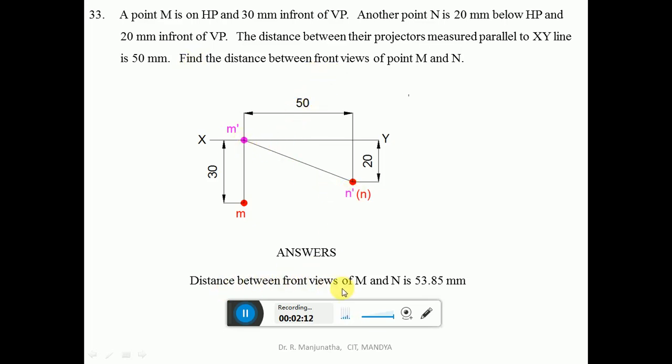The distance between the front views of M and N is 53.85 if you are doing it in CAD. If you are doing it manually, then it becomes 54 mm. This is how we will be able to solve this particular problem.